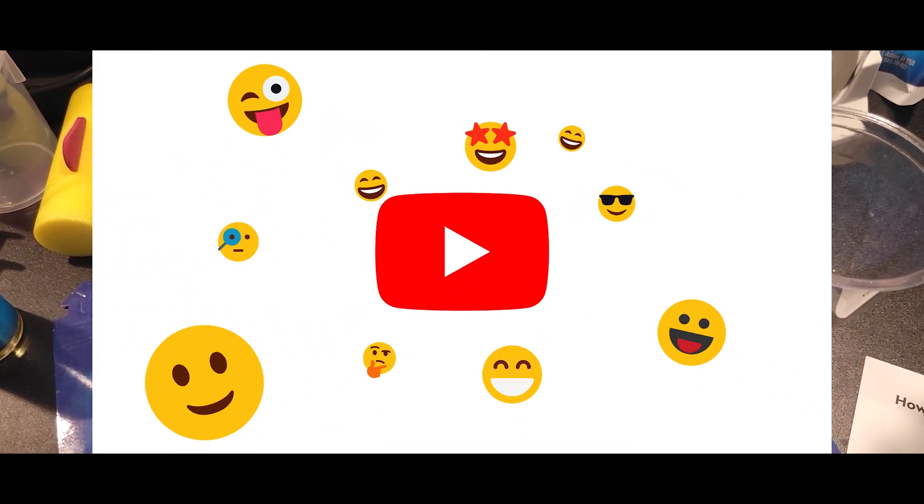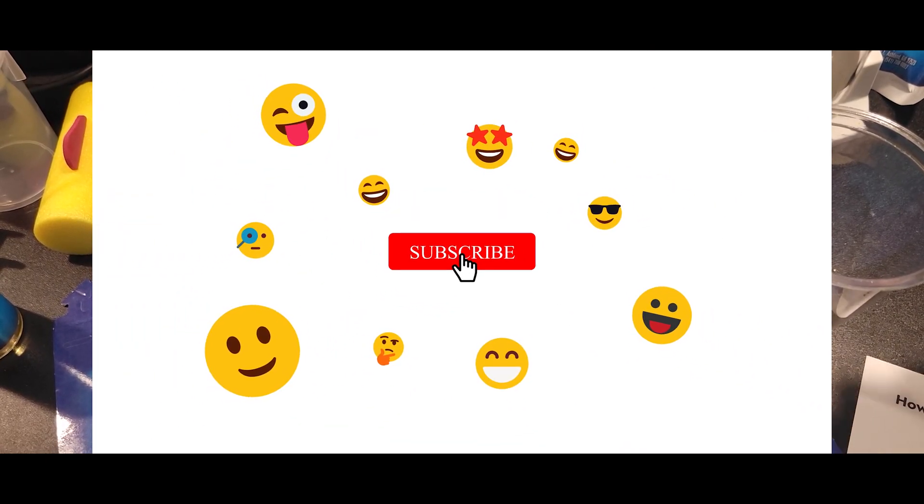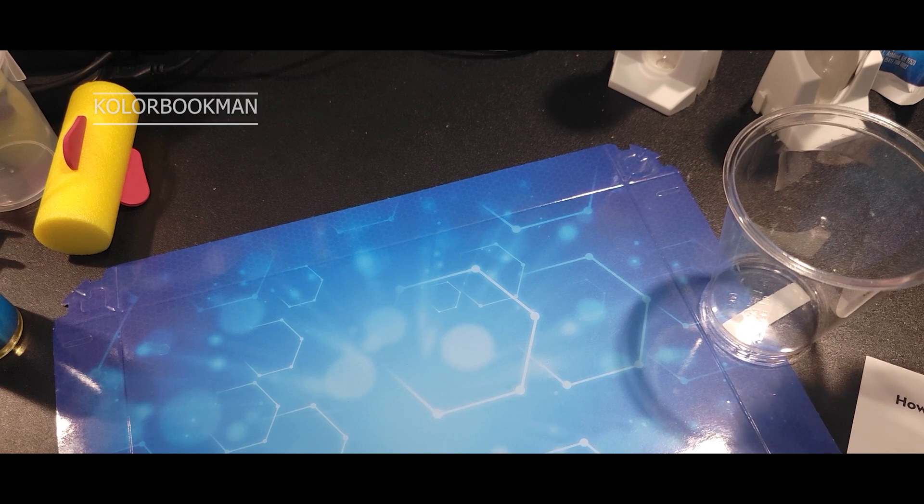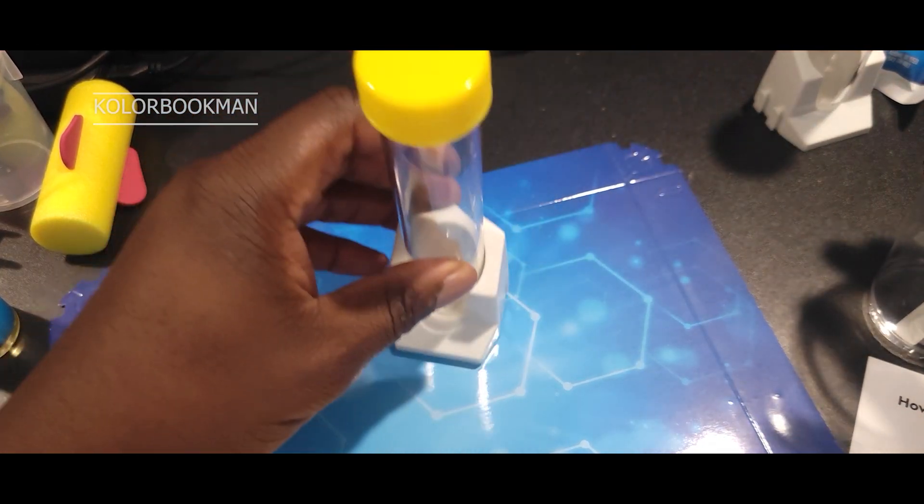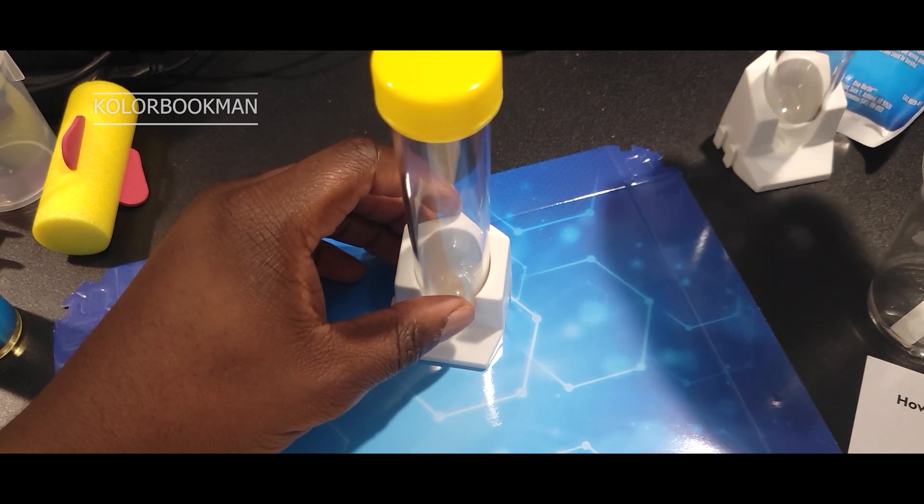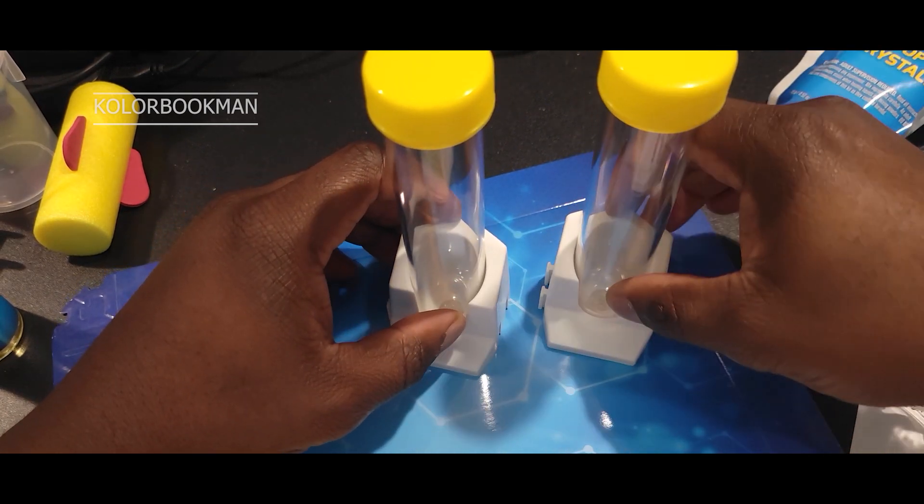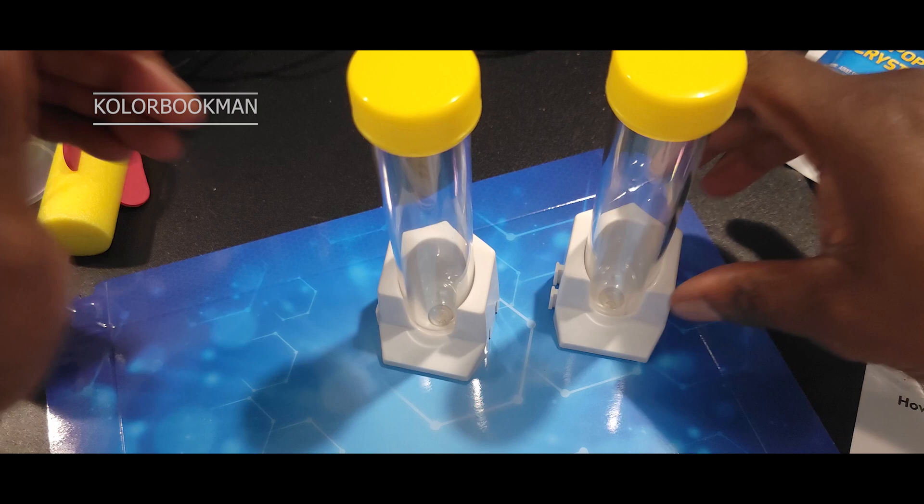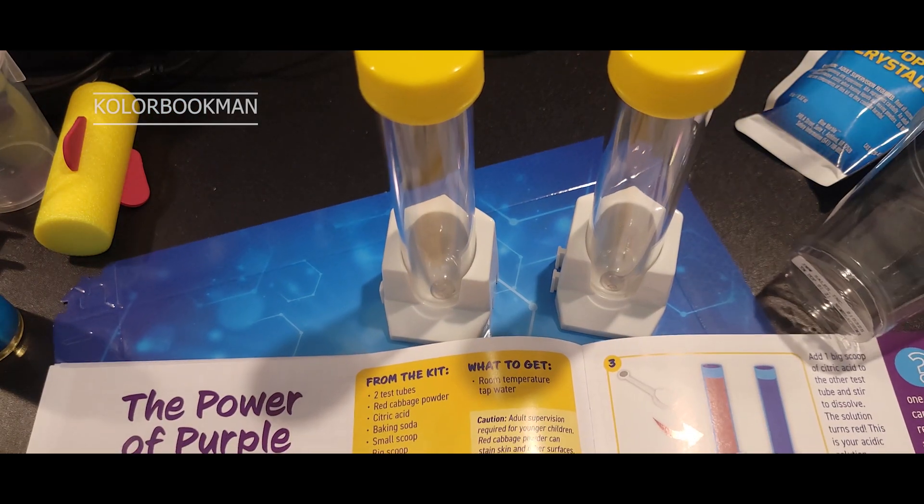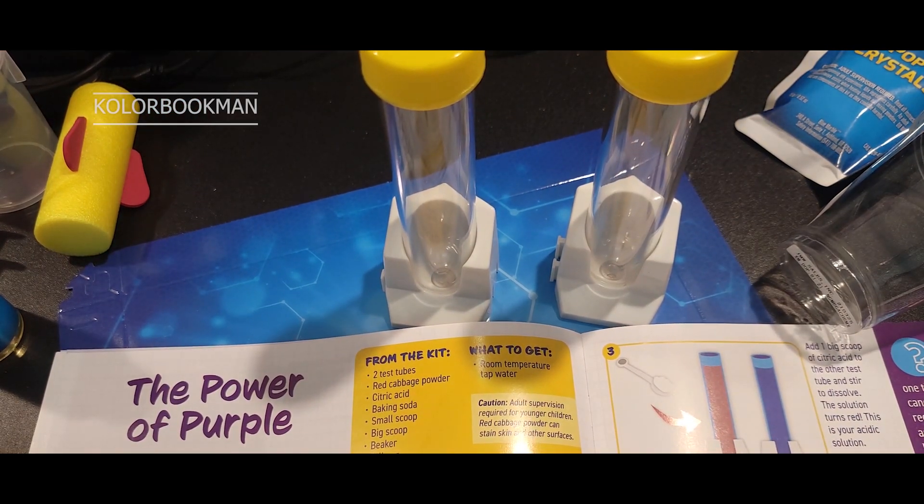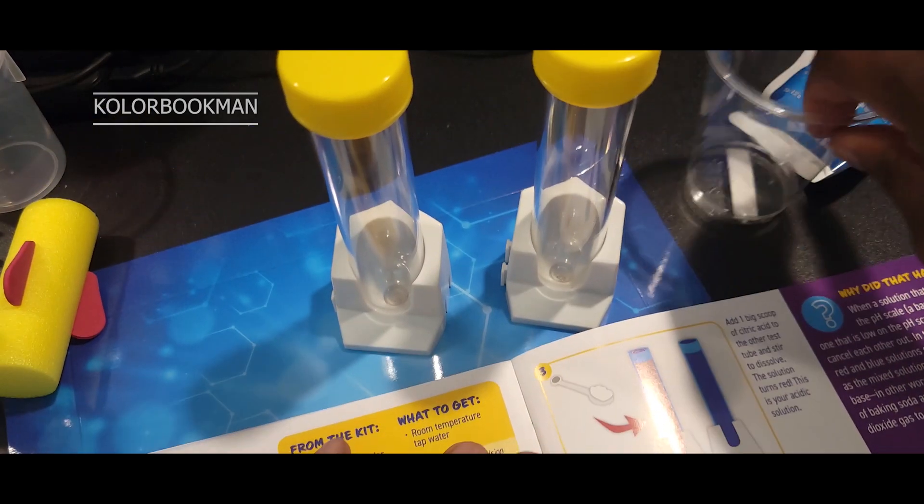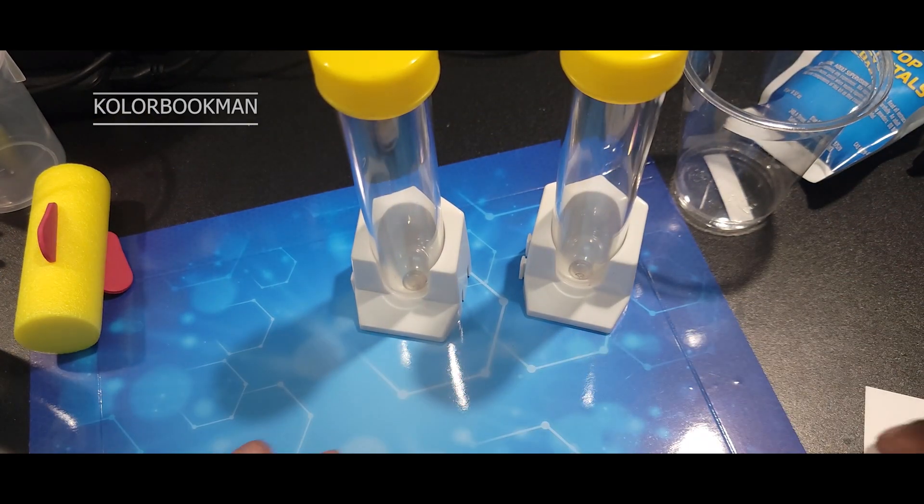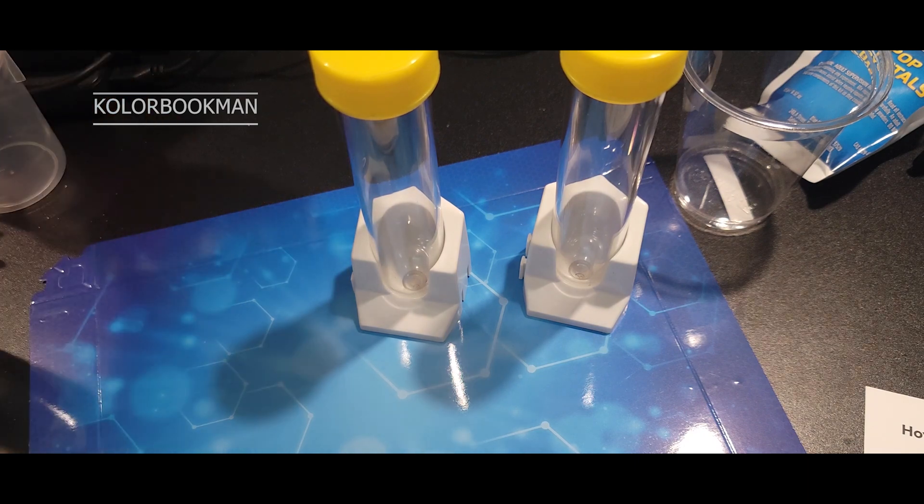Hey guys, this is ColorBookMan and today we're going to play with this new kit from National Geographic Science Kit. So today we have two flasks here and this kit is going to be called the Power of Purple. You guys can grab one of these from Amazon or your nearest store.